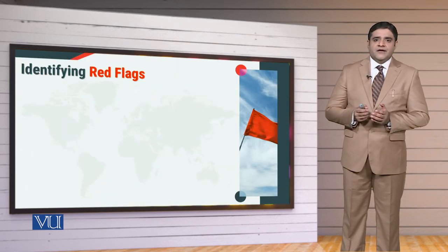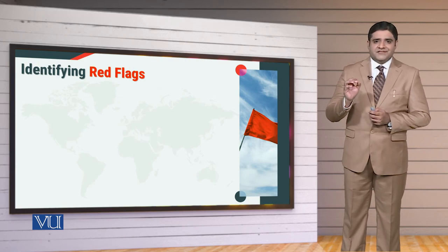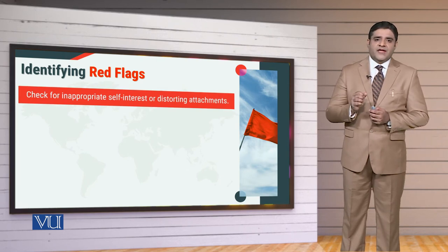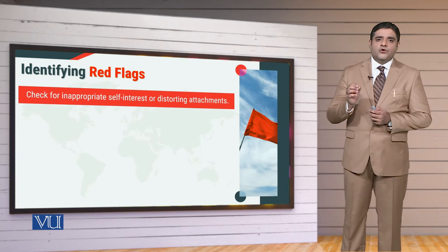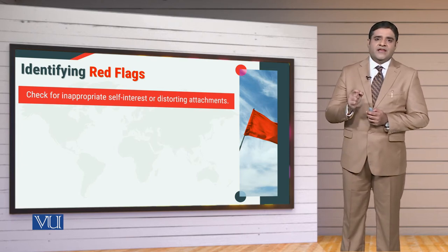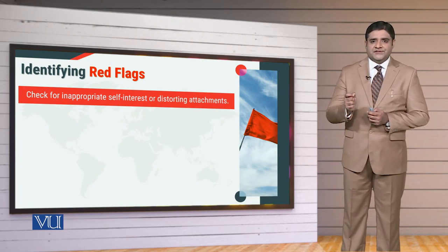When we are going to take decisions and put red flags on our biases, there are certain things we need to go through in detail. The first is that we have to look at which of our attachments are creating distortion in our decision making, and we have to be careful about those associations and affiliations.